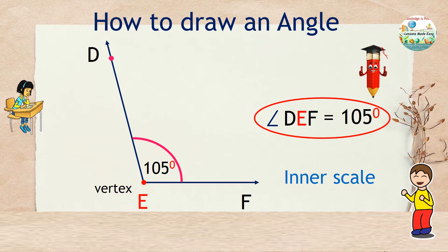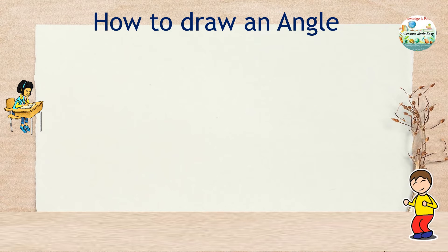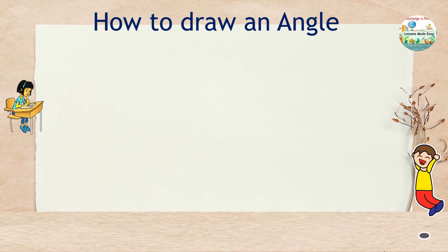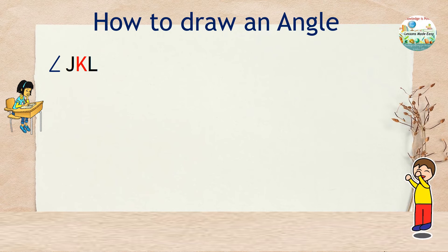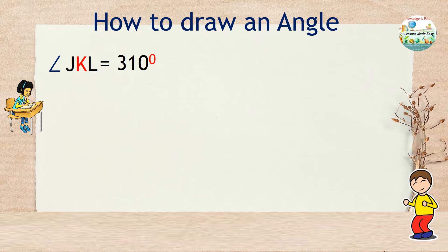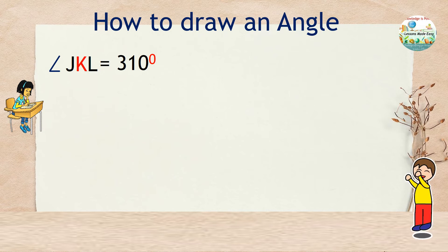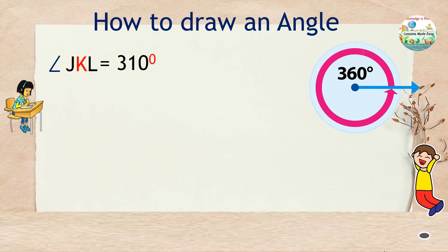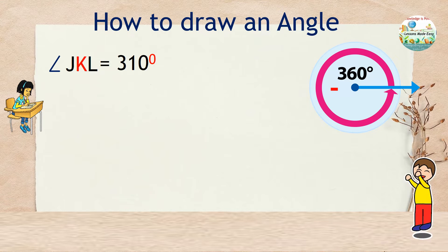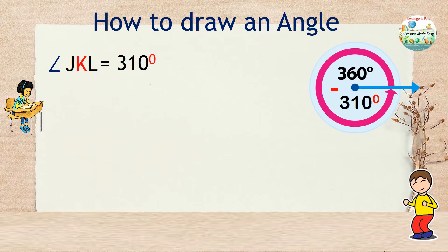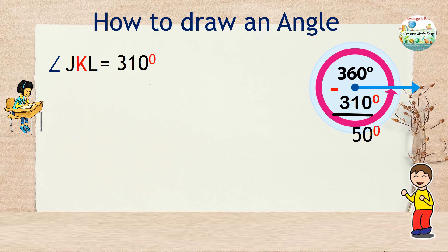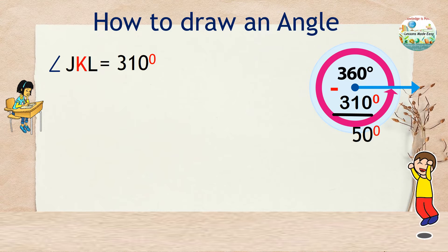But how do you draw an angle that is over 180 degrees, considering the maximum scale in the protractor is only up to 180? Let's try this example. Draw angle JKL whose measurement is 310 degrees. How do we go about this? Should we use two protractors and put one upside down? How about this? Do you remember the complete angle of 360 degrees? What about if we just find the difference between 360 degrees and 310 degrees? The difference is only 50. So I think you'll agree with me that it's easier to draw 50 degrees than 310 degrees, right? So let me show you how it's done.